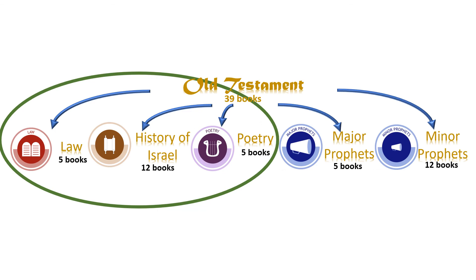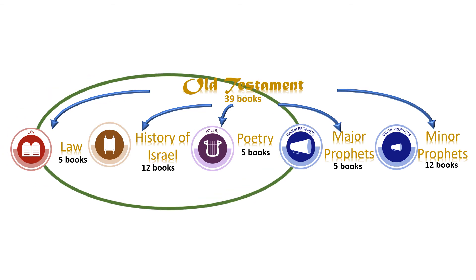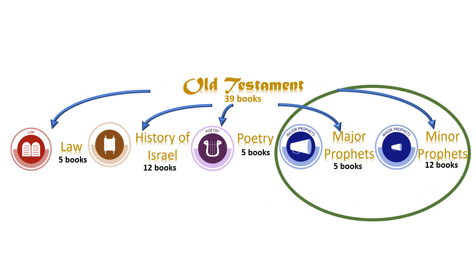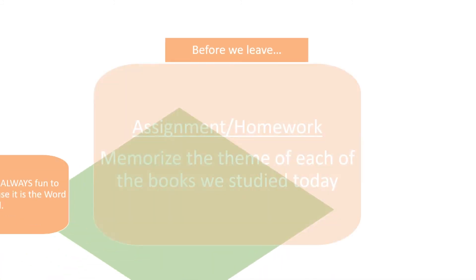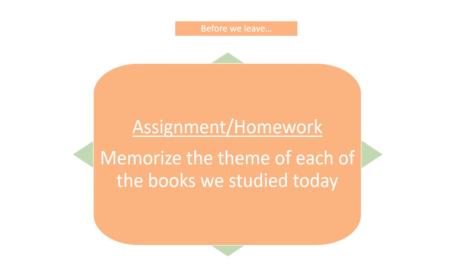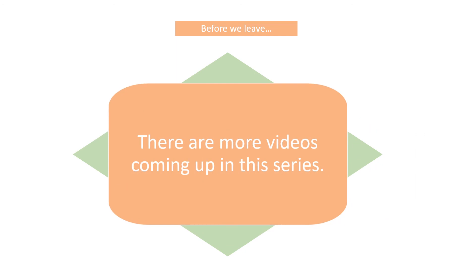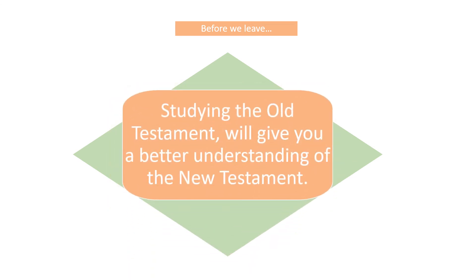Now that we've been through the first three categories of the Old Testament, hopefully you've got a good understanding of the first 22 books of the Bible. In the next lesson we will cover the last two categories, written by the prophets to the people of Israel, urging them to repent from their sins and look for the coming of the Messiah. Before we leave, it would be a good idea to memorize the theme of each book we studied today. Remember, studying the Old Testament will give you a better understanding of the New Testament. Until we meet, have a blessed time.